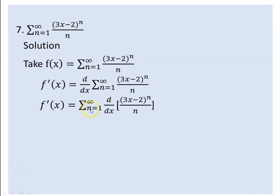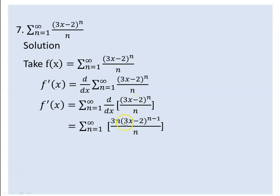The running variable is n. Then the derivative of the power of n — the derivative of x to the power of n brings the exponent down. The exponent comes down and you subtract one from the exponent, so you get (3x-2) to the power of n minus one. The coefficient of x is three.